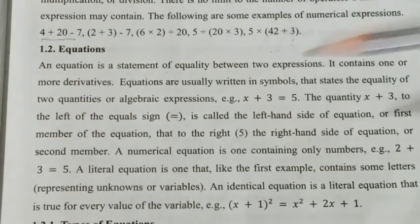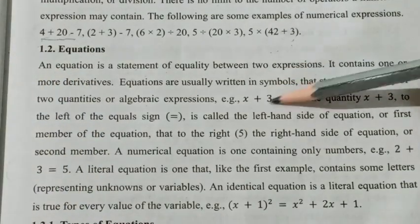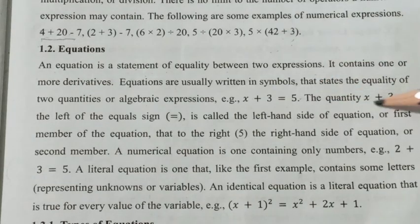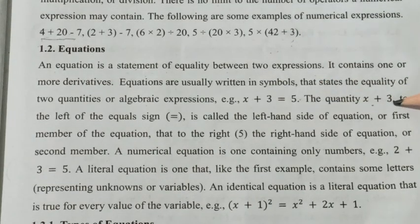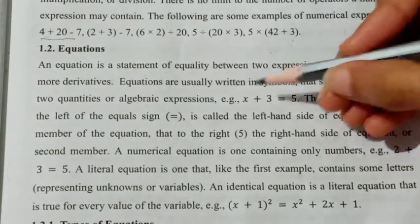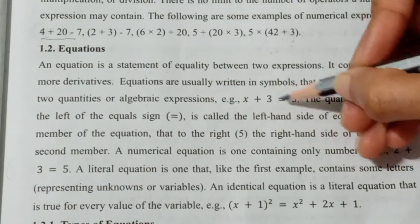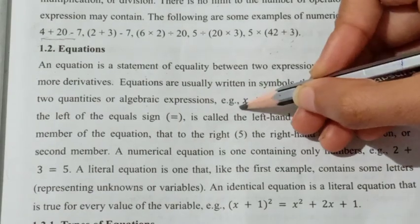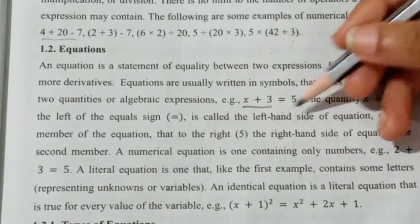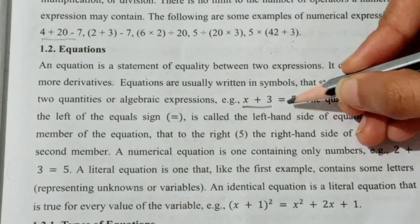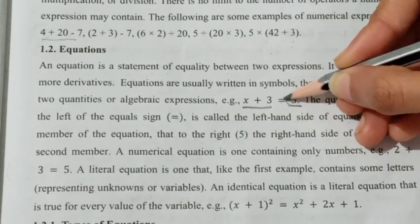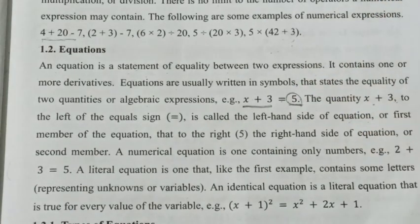For example, x plus 3 is equal to 5. Here, x plus 3 is the left hand side of the equation, and 5 is the right hand side.